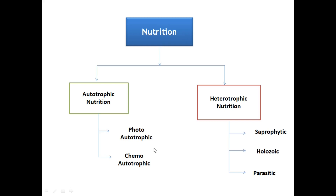In photo-autotrophic nutrition, the name itself indicates that photo means light, so food is prepared in the presence of sunlight. Example: green plants. In chemo-autotrophic nutrition, food is prepared in the presence of chemicals. Example: purple bacteria and sulphur bacteria. In heterotrophic mode of nutrition, hetero means others, troph means food. Organisms which depend on others for food are called heterotrophs. It is subdivided into three categories: saprophytic, and parasitic mode of nutrition, which we will discuss in detail in further classes.